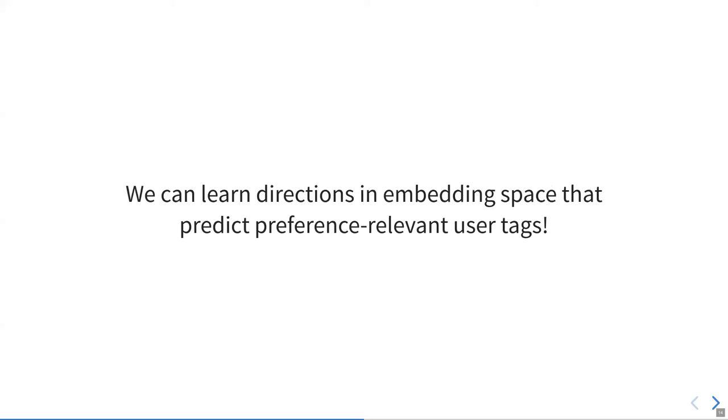What we find is that indeed we can learn directions in embedding space that predict preference relevant user tags. Now initially, when I read my title slide, I promised that we would also talk about personalized semantics and one part of that is subjectivity. In our paper, we identified two types of subjectivity.